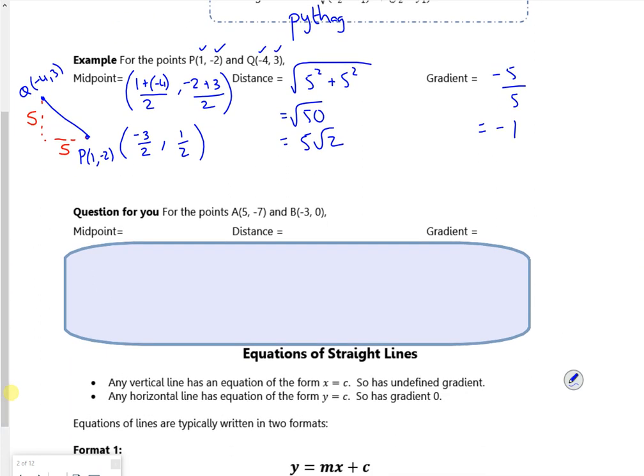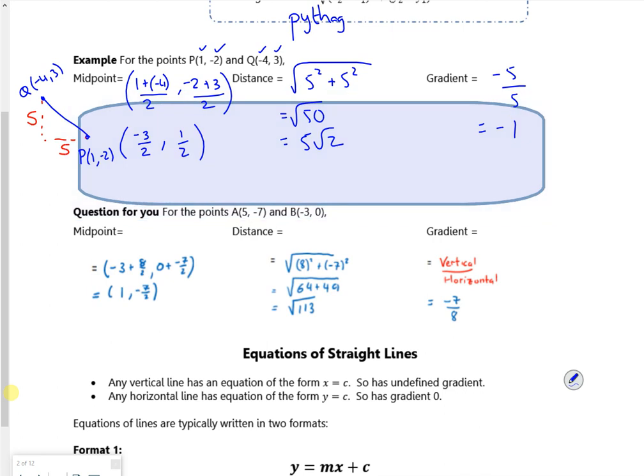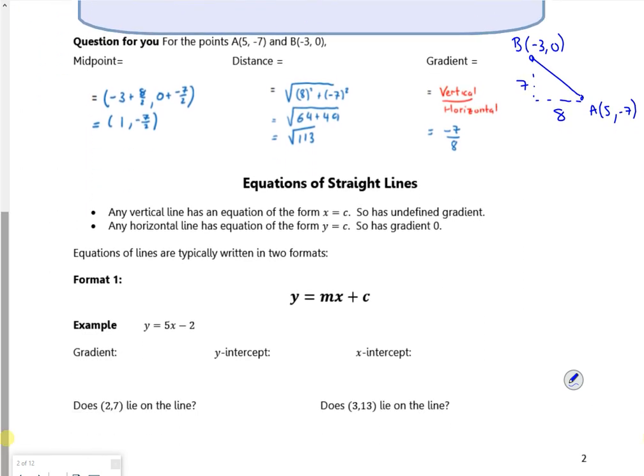There's a question for you, so please have a go at that one. For the points A(5, -7) and B(-3, 0), draw a little picture. A is at 5, minus 7, and B is at minus 3, 0, so it's left and up. Then you can work out how far across - you go across 8 and up 7. Keep an eye on the clock - there's a 10 minute timer running.